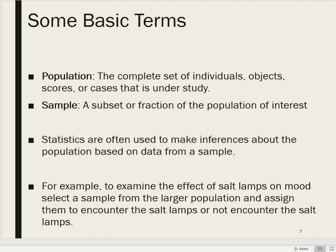I want to make a distinction between a population and a sample. A population is basically the complete set of individuals, objects, scores, or cases that we're interested in. So we might be interested in the entire human race, or teenagers, or a certain breed of dog, or a certain type of tire. It's basically whatever population we're trying to generalize our results to.